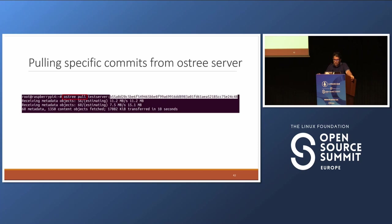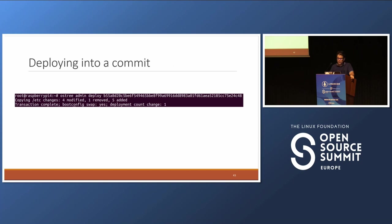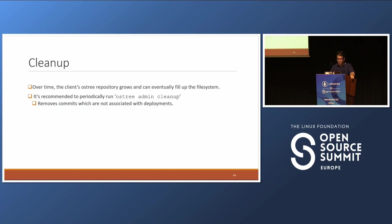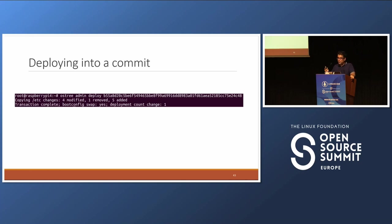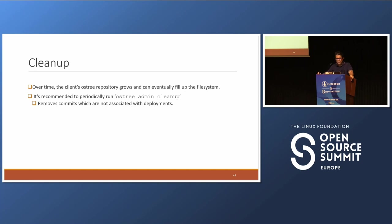As far as pulling specific commits from the OSTree server, the command is OSTree pull with the remote name — in this case test-server — colon, followed by the commit you're trying to pull. We'll see the number of metadata files pulled, the content objects and their size, and how long the download took. To deploy the commit, use OSTree admin deploy, and after a reboot you'll boot out of this new commit and be in the new file system. A word on cleanup: over time the client's OSTree repository grows and can eventually fill up the file system. It's recommended to periodically run OSTree admin cleanup, which removes commits not associated with deployments.